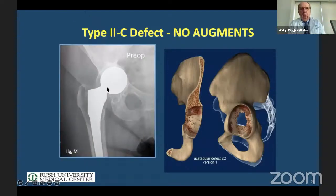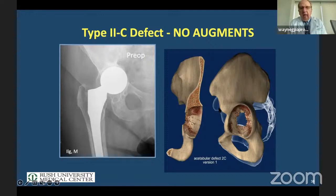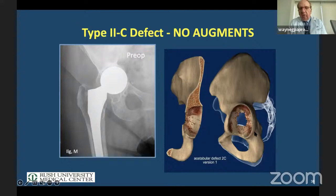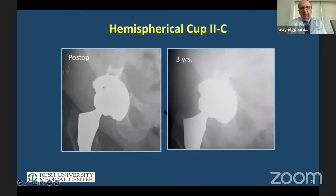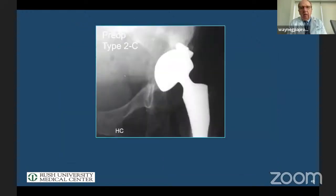What happens when we have some damage to Kohler's line but no superior migration? The teardrop is still intact. Even though there's a big hole medially, because there's no superior migration, this superior area is going to be intact. So we can ream out into the periphery and get a good peripheral fit.